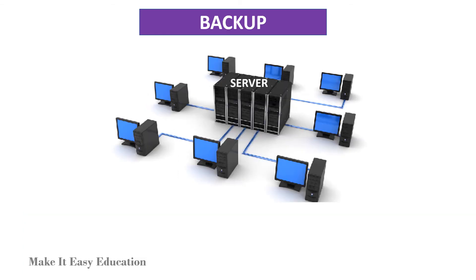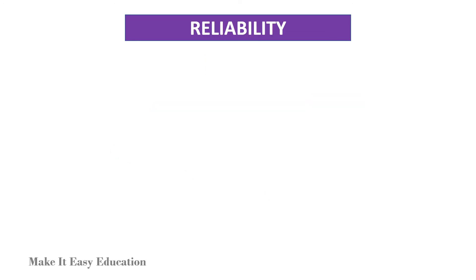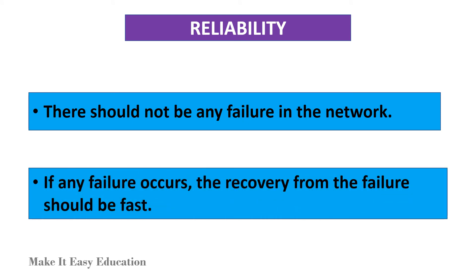Backup: A computer network must have a central server that keeps the backup of all the data that is to be shared over a network, so that in case of a failure it should be able to recover the data faster. Reliability: There should not be any failure in the network. If any failure occurs, the recovery from the failure should be fast.